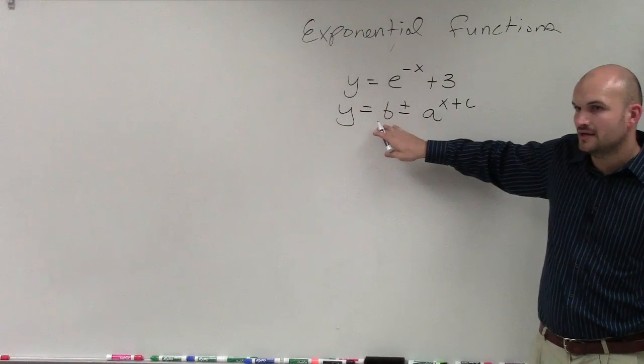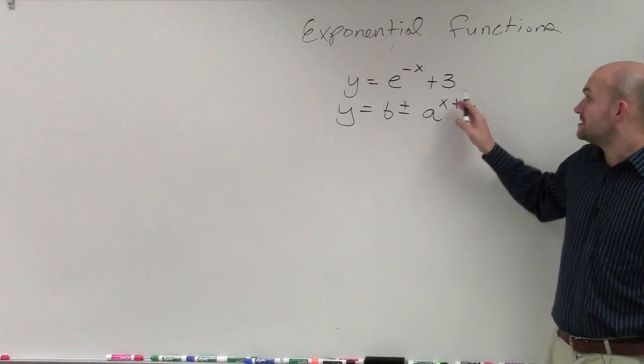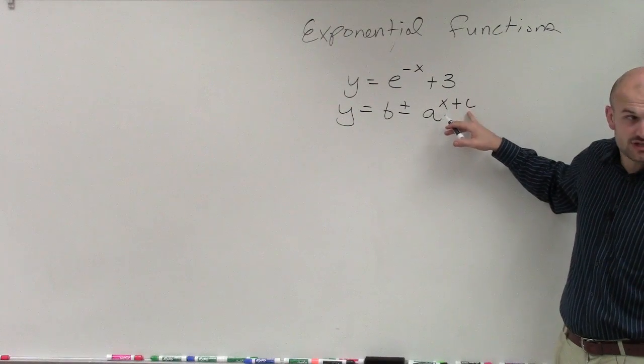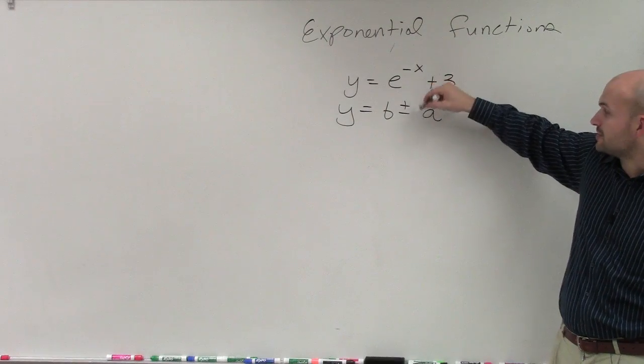Where b is adding outside the function, so that's going to shift the graph up and down. c is adding inside the function, so that's going to shift the graph left and right.